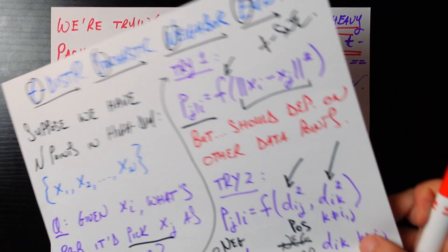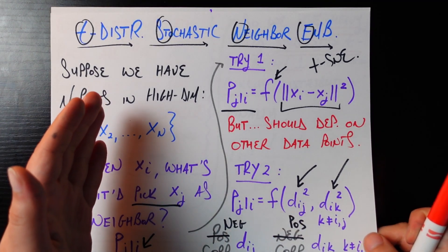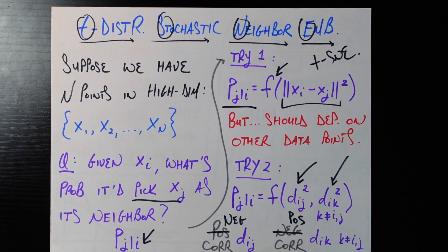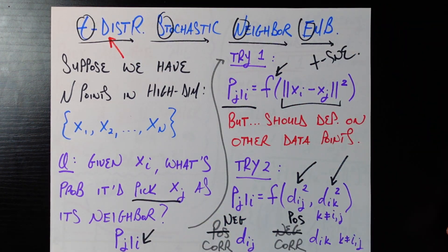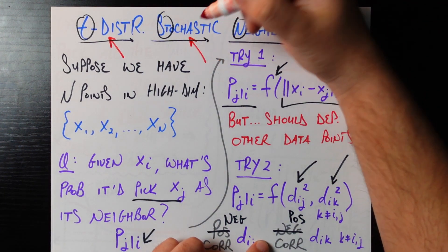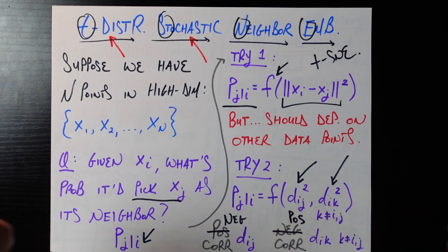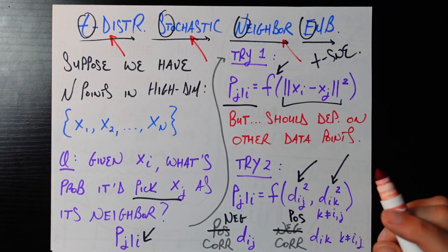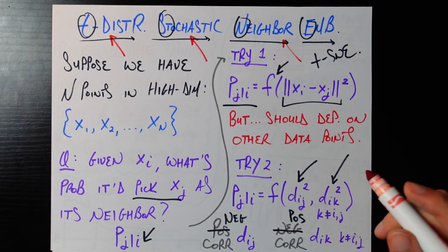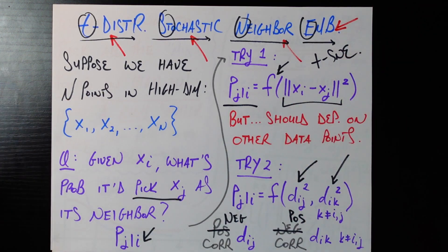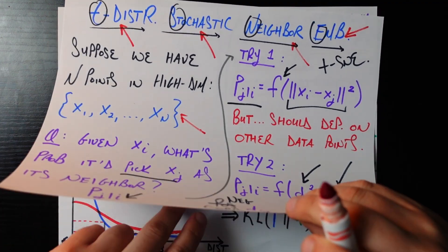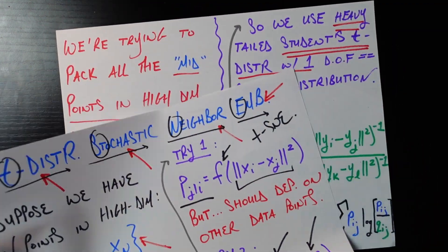This is in the name of the whole algorithm: T-Distributed Stochastic Neighbor Embedding. The 'T' refers to the t-distribution we just discussed. 'Stochastic' because this is all based on random processes — we're dealing with probabilities. 'Neighbor' because we're working on a neighbor-by-neighbor basis. And 'Embedding' because we're trying to get our high dimensional embeddings into a much lower dimensional space.